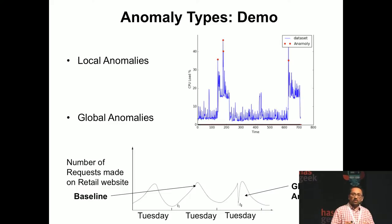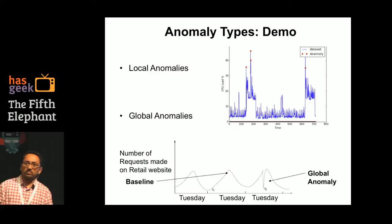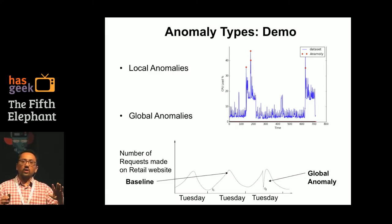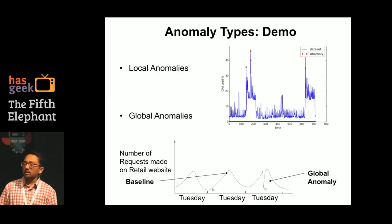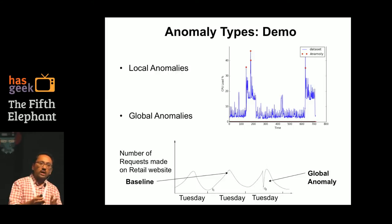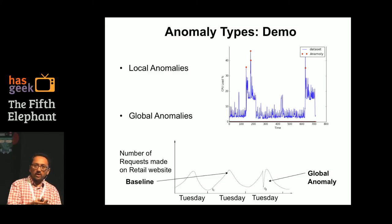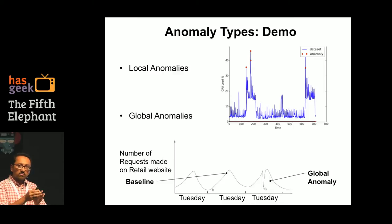Let me fix the ideas here — the way we are approaching the problem. Broadly speaking, there are two kinds of anomalies: one is a local anomaly and another one is a global anomaly. A local anomaly is when you are looking at a time scale in seconds or minutes and you need to make a decision: is there an anomaly there?